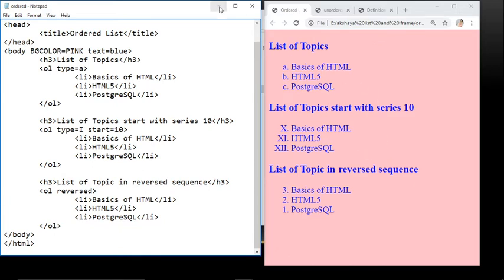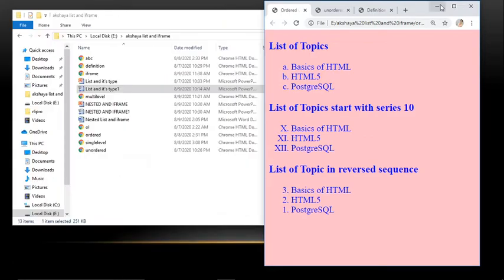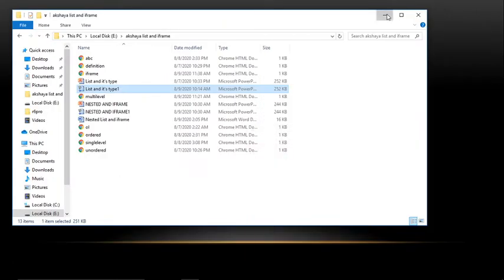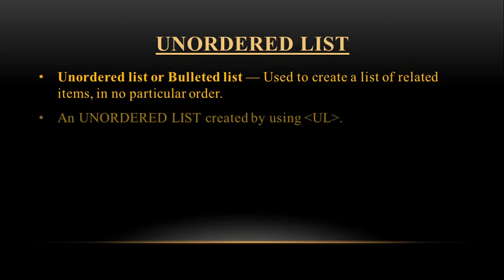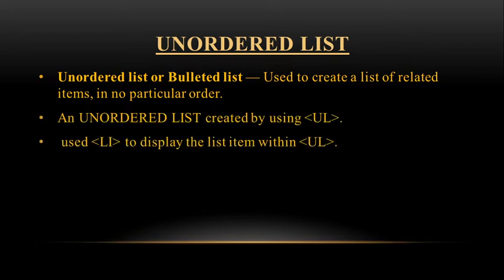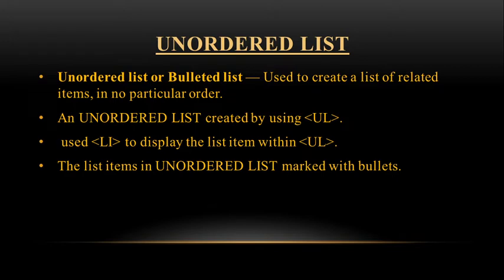Now we move to the unordered list. An unordered list is also known as a bullet list and is used to create a list of related items in no particular order. An unordered list is created using the UL tag. We use the LI tag to display list items within the UL tag. The list items in an unordered list are marked with bullets.